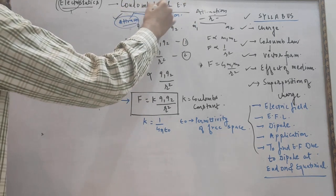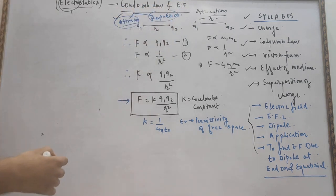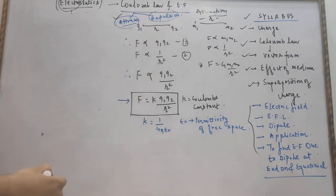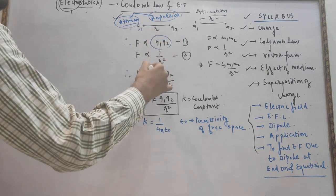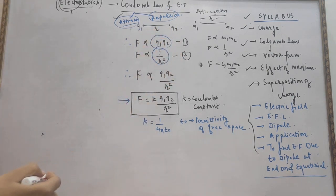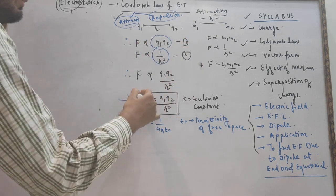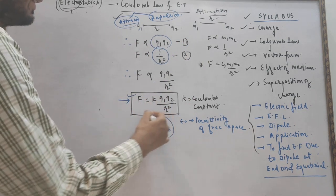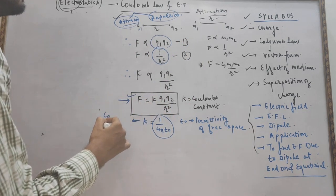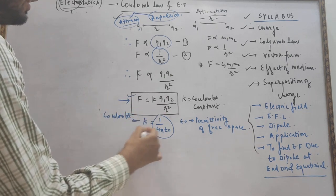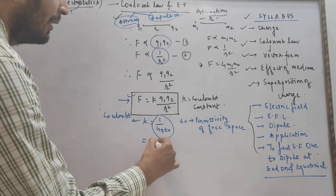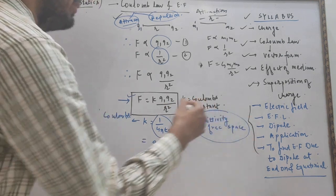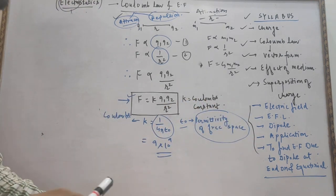Suppose there are two charges at rest, separated by distance r. The force is directly proportional to the product of the charges and inversely proportional to the square of the distance between them. Combining both, we get F = k·q1·q2 / r². Here k is the Coulomb's constant, with value 1/(4πε₀), or 9 × 10⁹ N·m²/C². Here ε₀ is the permittivity of free space.